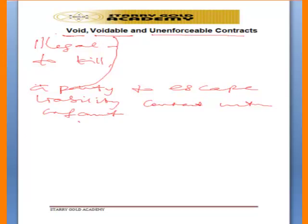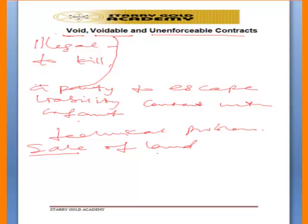An unenforceable contract is one that is perfectly okay but has a technical problem. For example, a contract for the sale of land must be in written form. Where such a contract is not written and a problem arises, the court will direct the parties to put the contract in written form before it can enforce or pronounce anything regarding it. Until it is in written form it remains unenforceable. That is what we call an unenforceable contract.